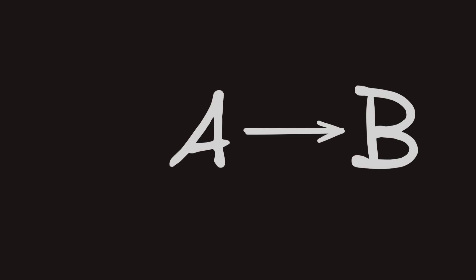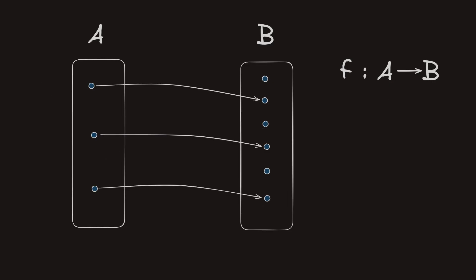But how do we implement functions in type theory? Well, to start off, we have something called a function type. For instance, let's consider the function type A arrow B. We say that the function f inhabits this function type if f maps every term of A to a term of B.